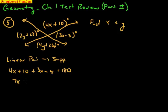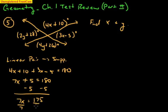4x and 3x is 7x. 10 minus 5 is 5. That equals 180. Let's subtract 5 from both sides. 7x equals 175, and we'll divide by 7. When you do this, you get x equals 25. So there's my value of x.